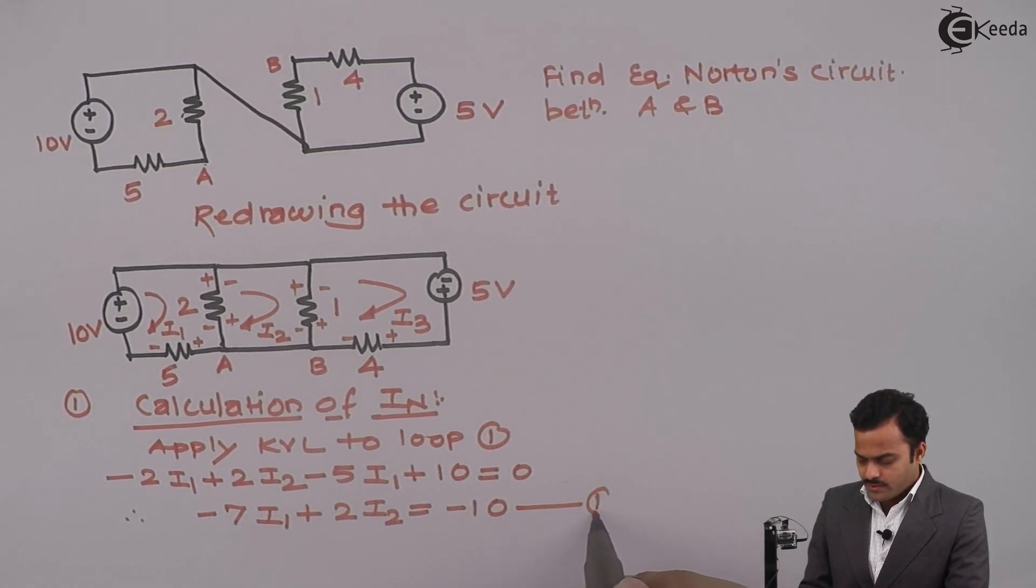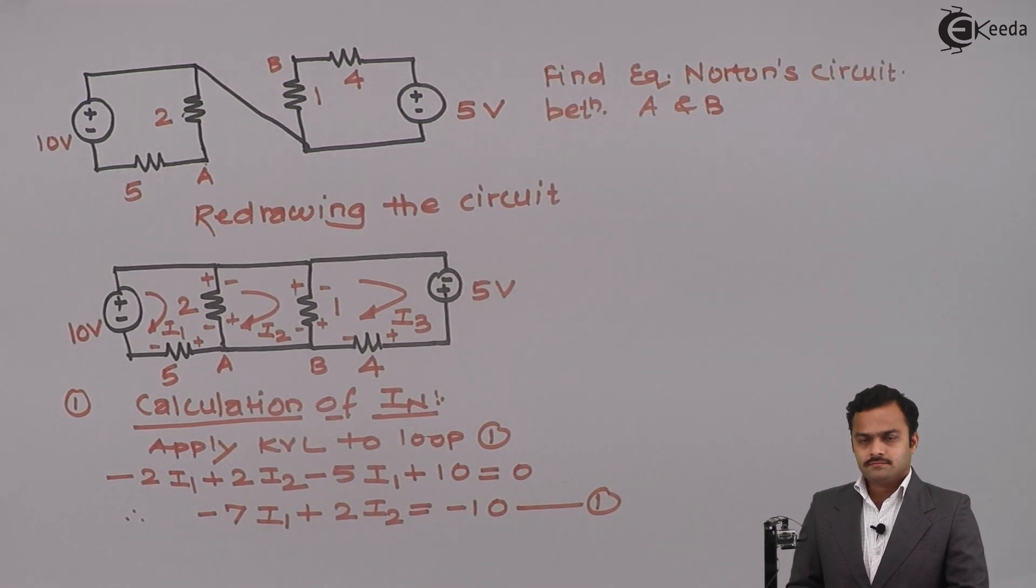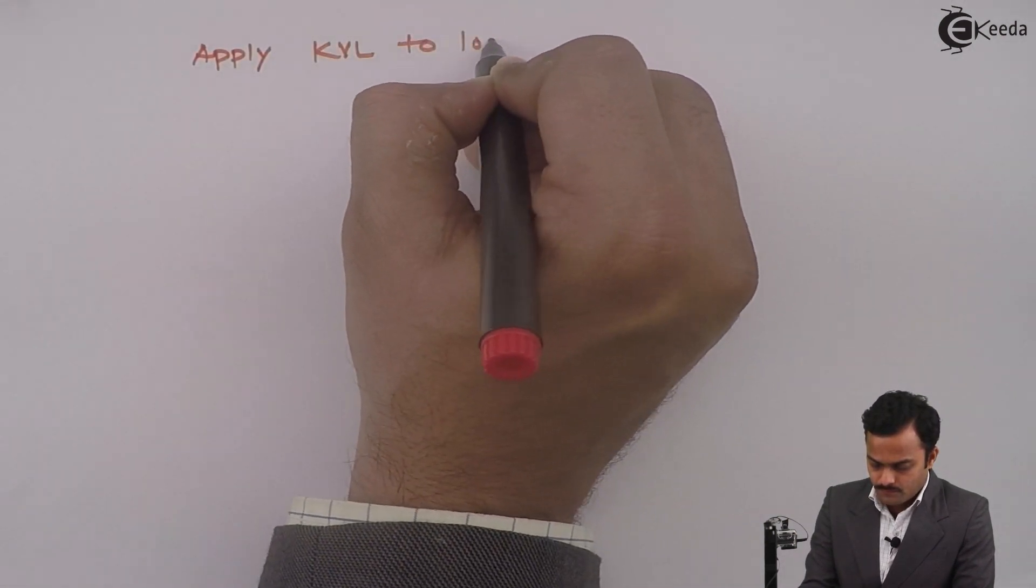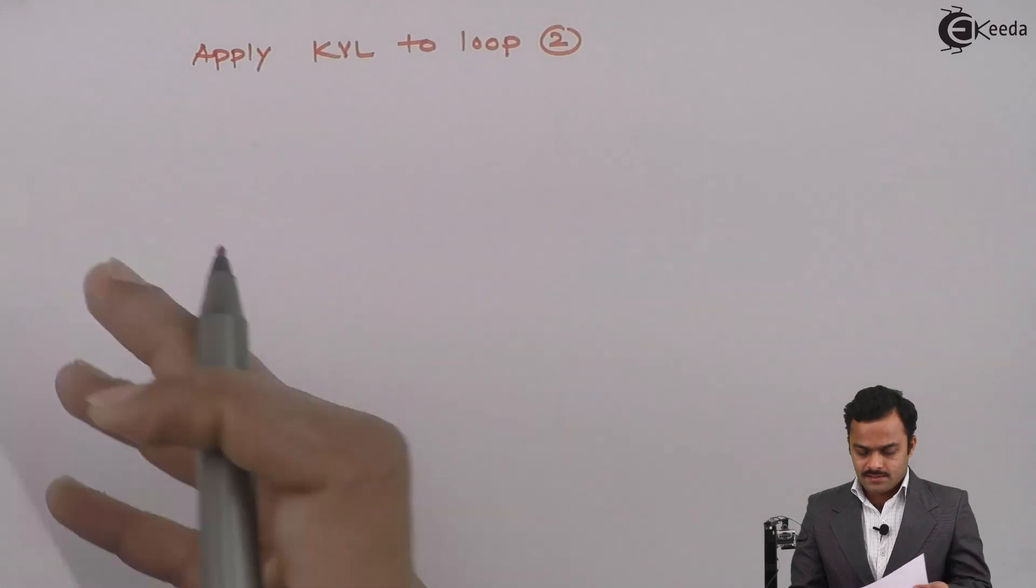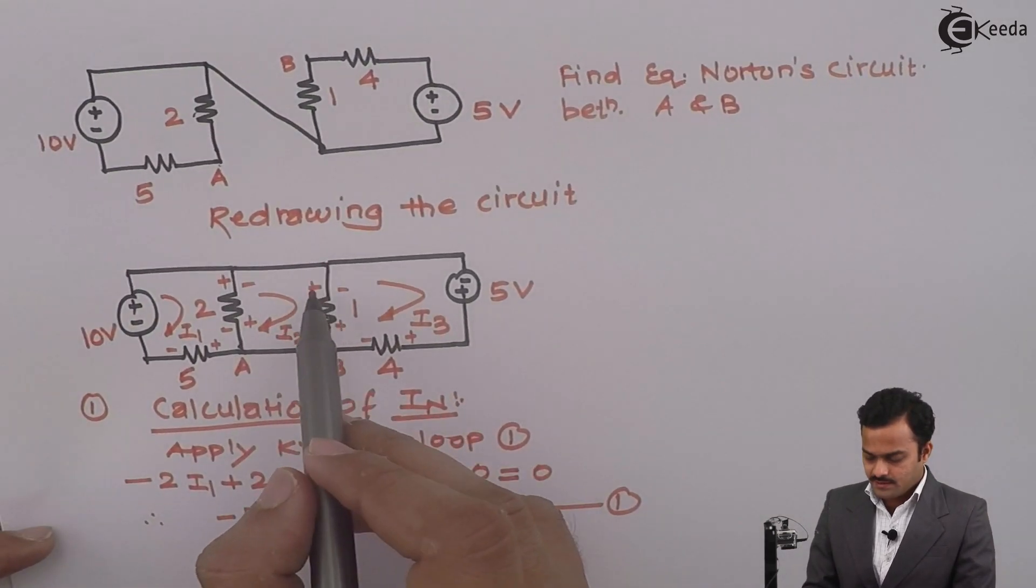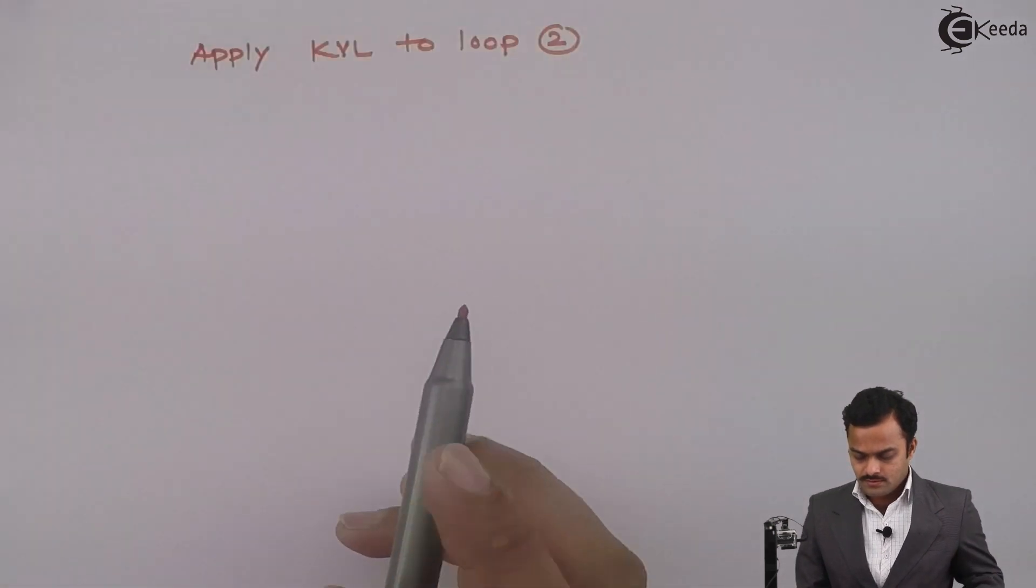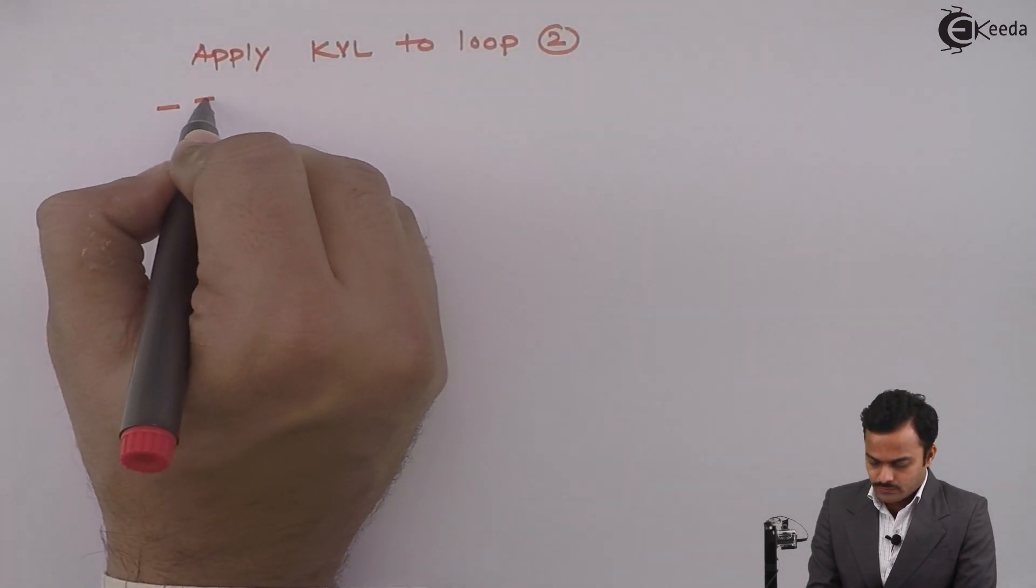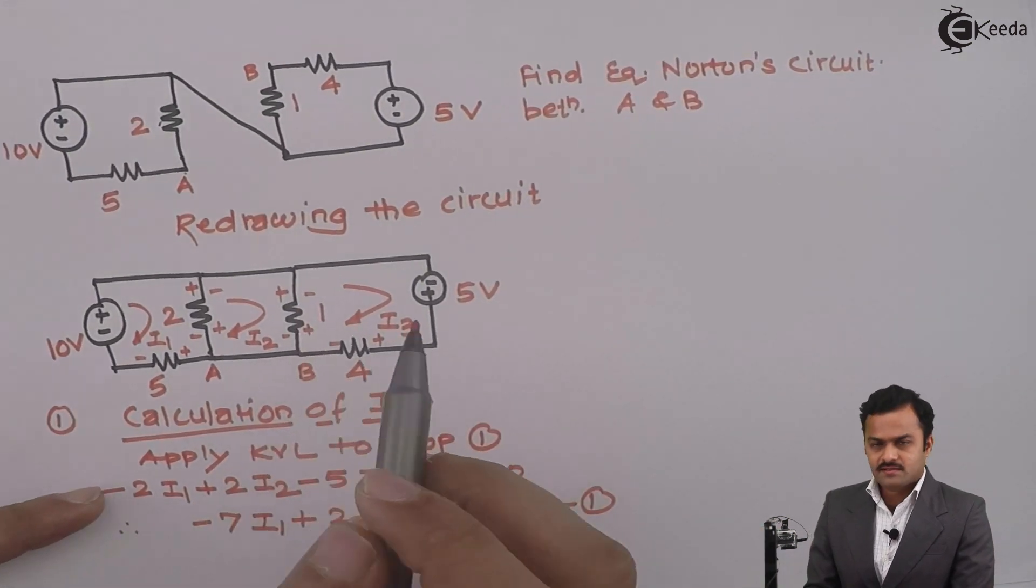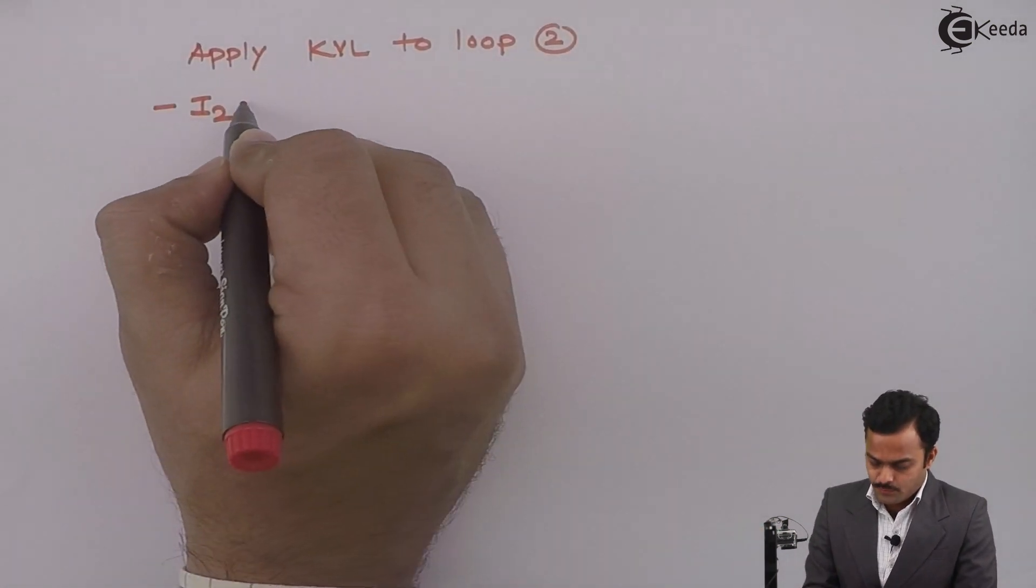Similarly I can apply KVL to loop number two. For this I will start from this point. No element is connected here. Plus minus, so it's minus I2, minus plus plus I3.